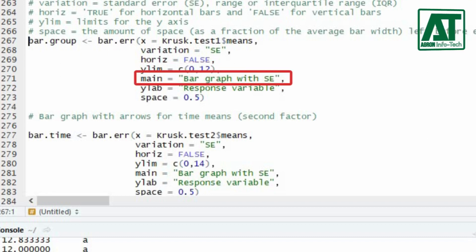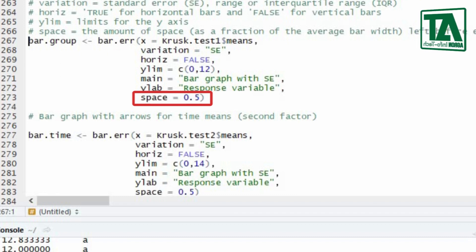Main argument specifies the title to be used for the graph. Y label represents the title to be used for response variable. In space argument use a value to show the amount of space left before each bar.